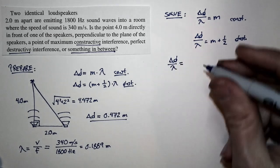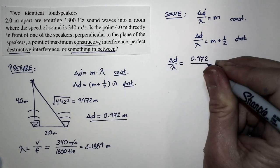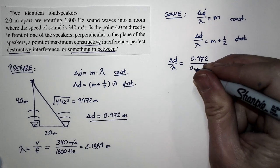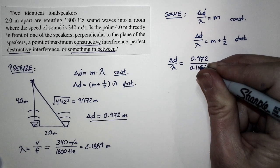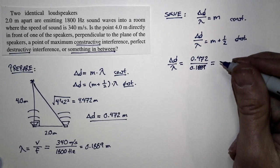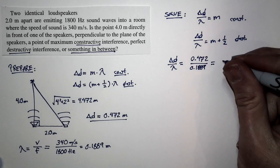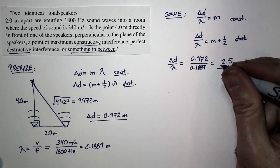ΔD equals 0.472. λ equals 0.1889. If we do the ratio, rounding it to two significant figures, we get this: the ratio is 2.5.